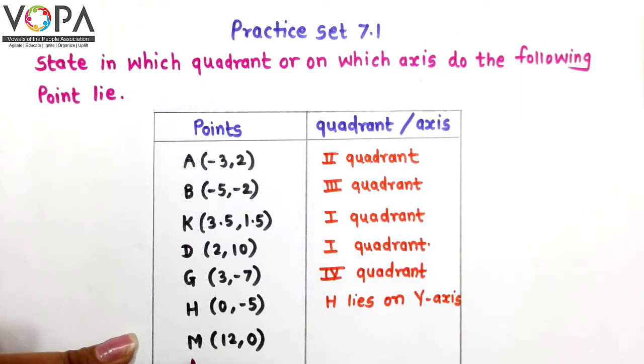The coordinates of point M are 12, 0. Here the y-coordinate of point M is 0. Therefore M lies on the positive x-axis.